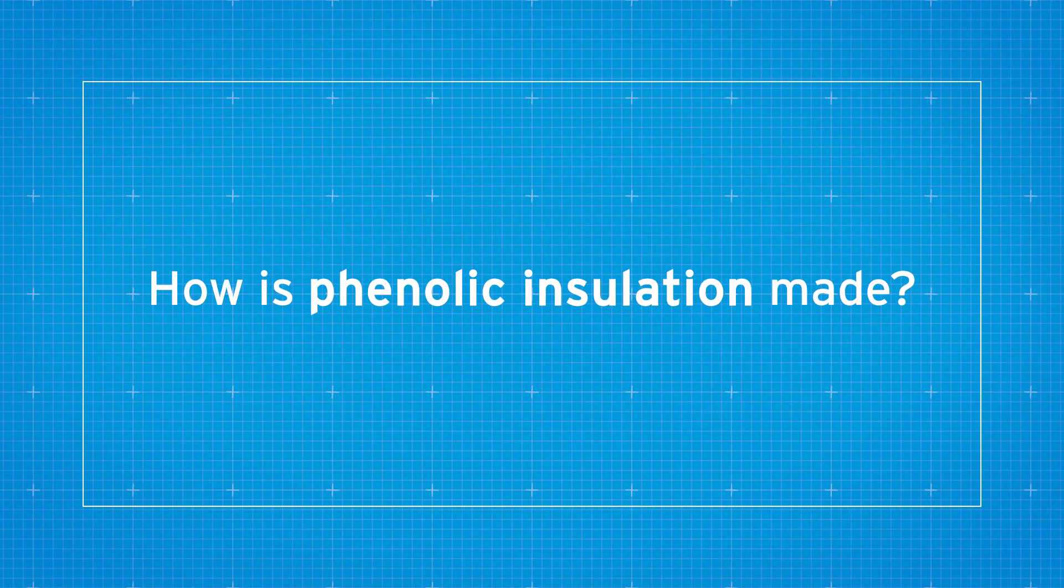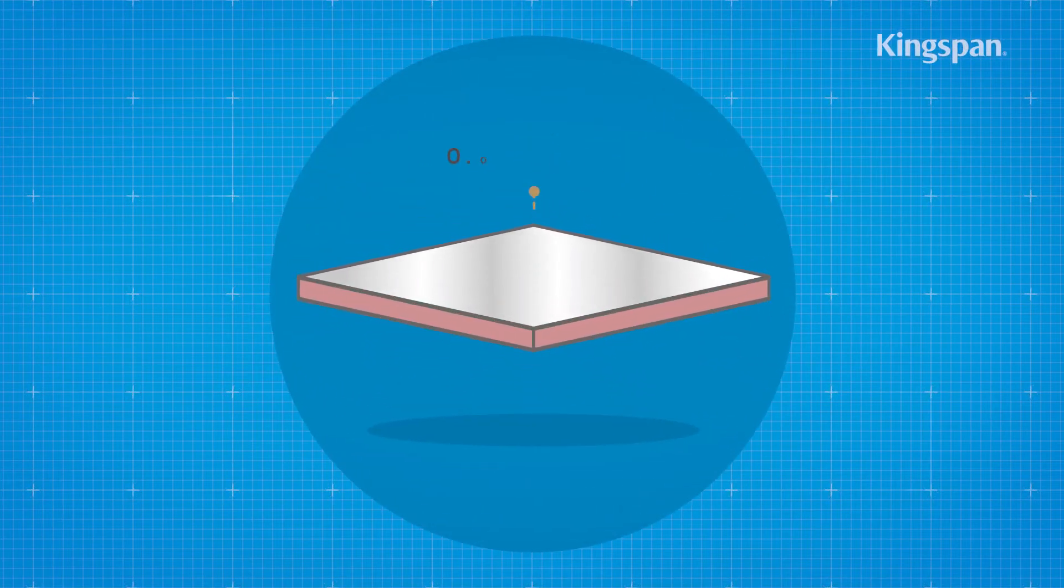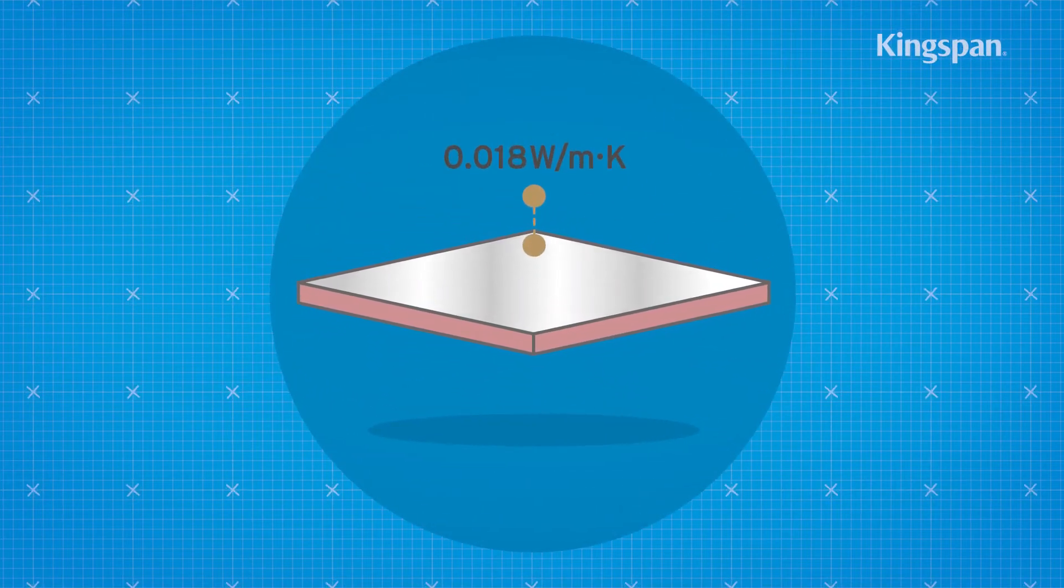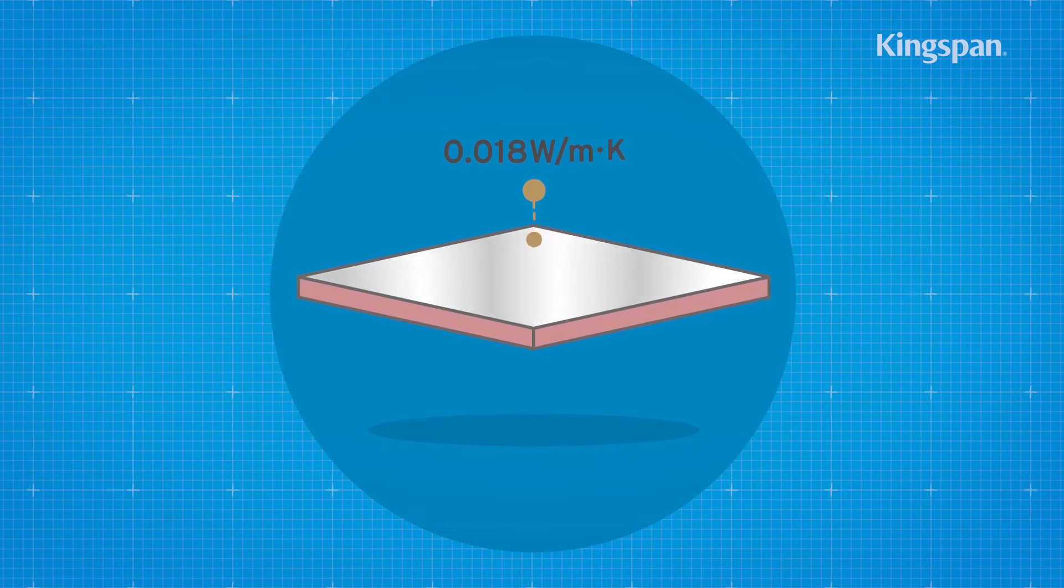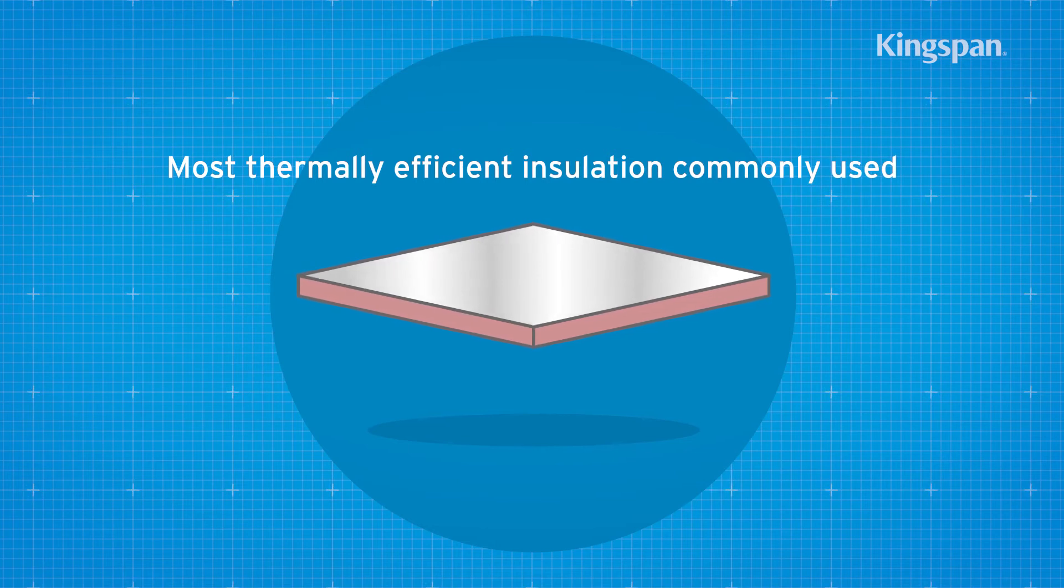How is phenolic insulation made? With thermal conductivities as low as 0.018 watts per meter Kelvin, phenolic insulation is the most thermally efficient insulation commonly used.